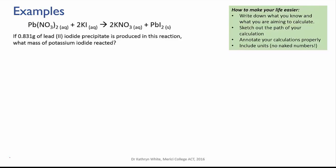And we're told that 0.831 grams of that precipitate, the lead iodide, is produced and we are to work out what mass of potassium iodide must have reacted.